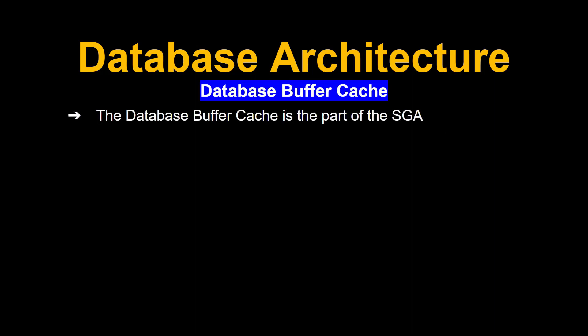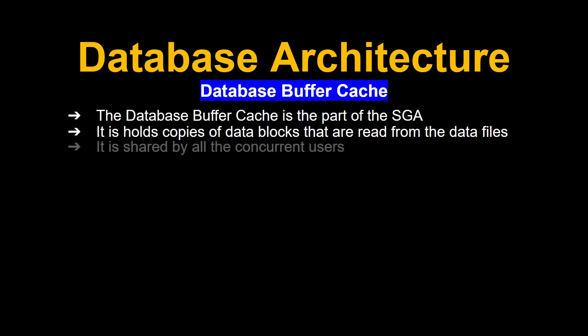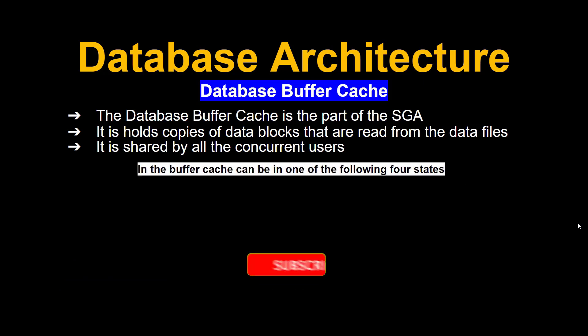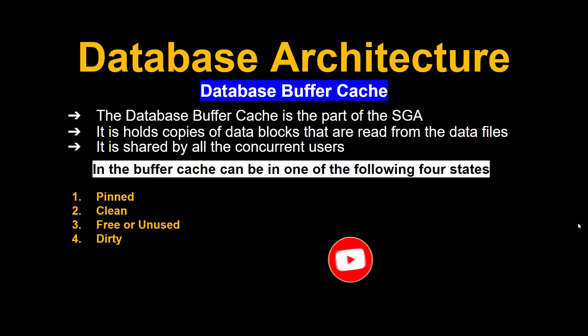The database buffer cache is part of the SGA and it holds copies of data blocks that are read from the data files. It is shared by all concurrent users. A buffer in the buffer cache can be in one of the following four states: Pin, Clean, Free or Unused, and Dirty — that's why we call it a dirty buffer.